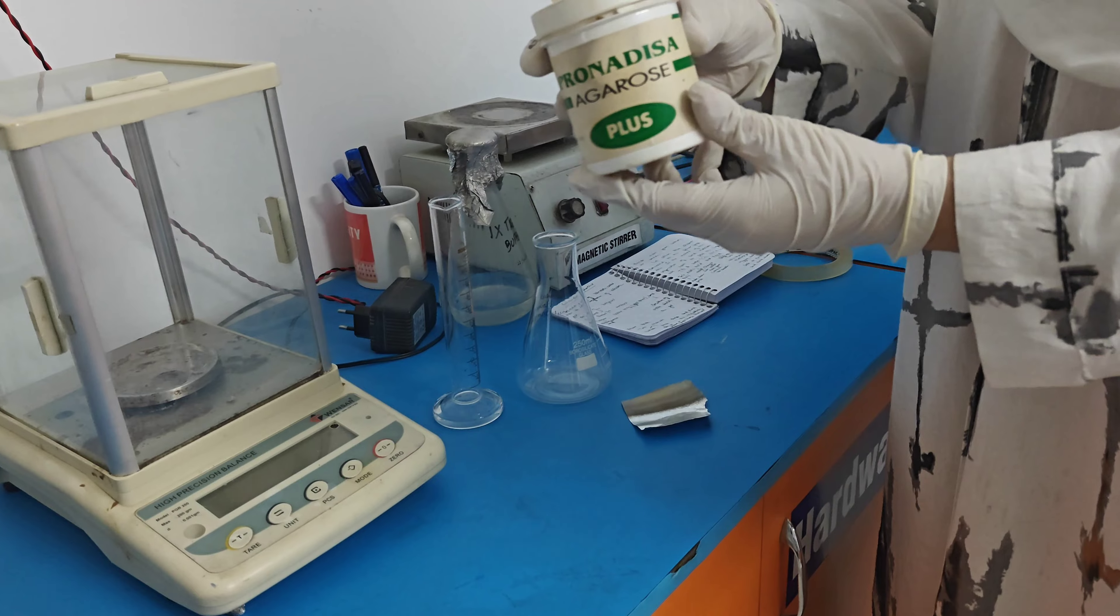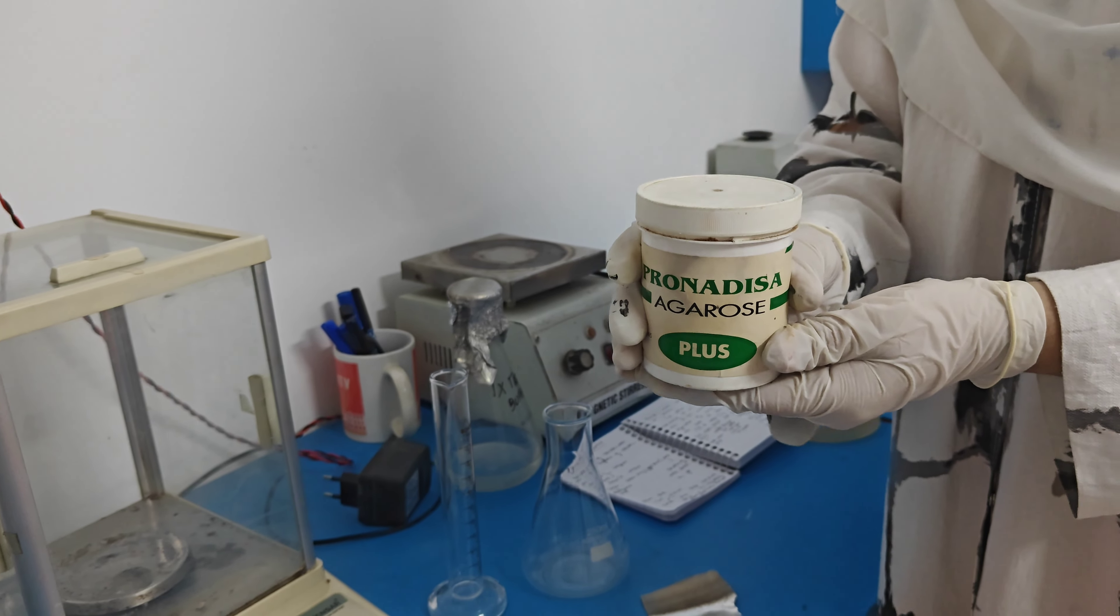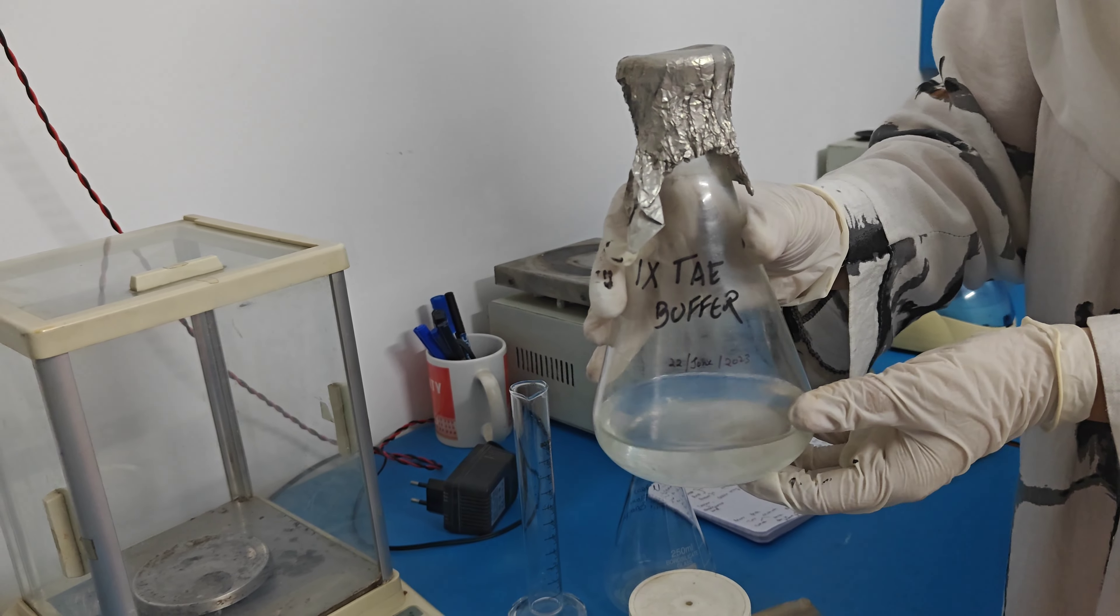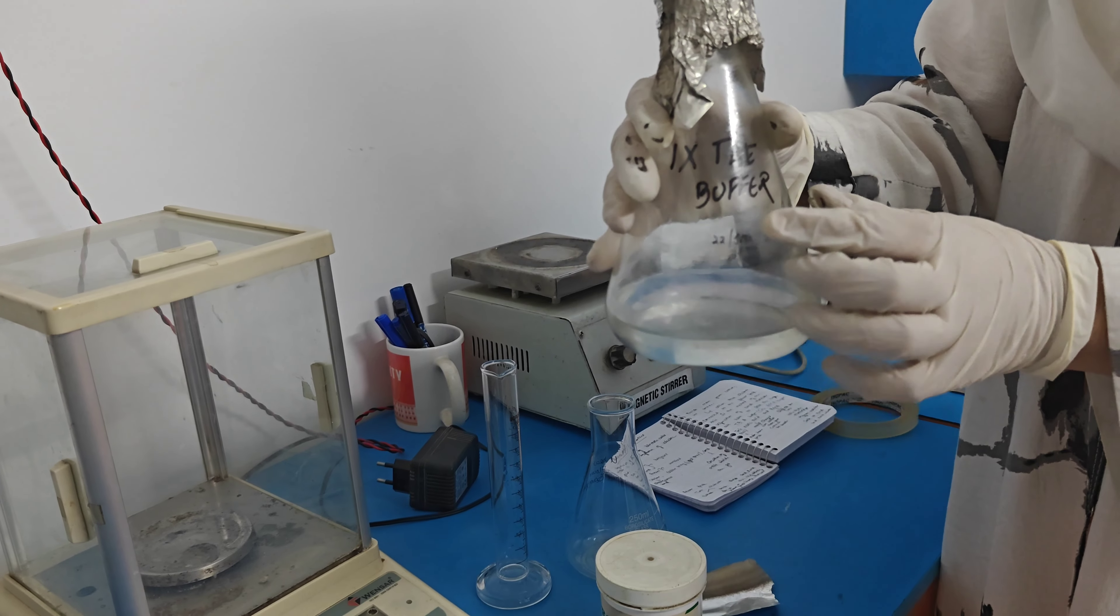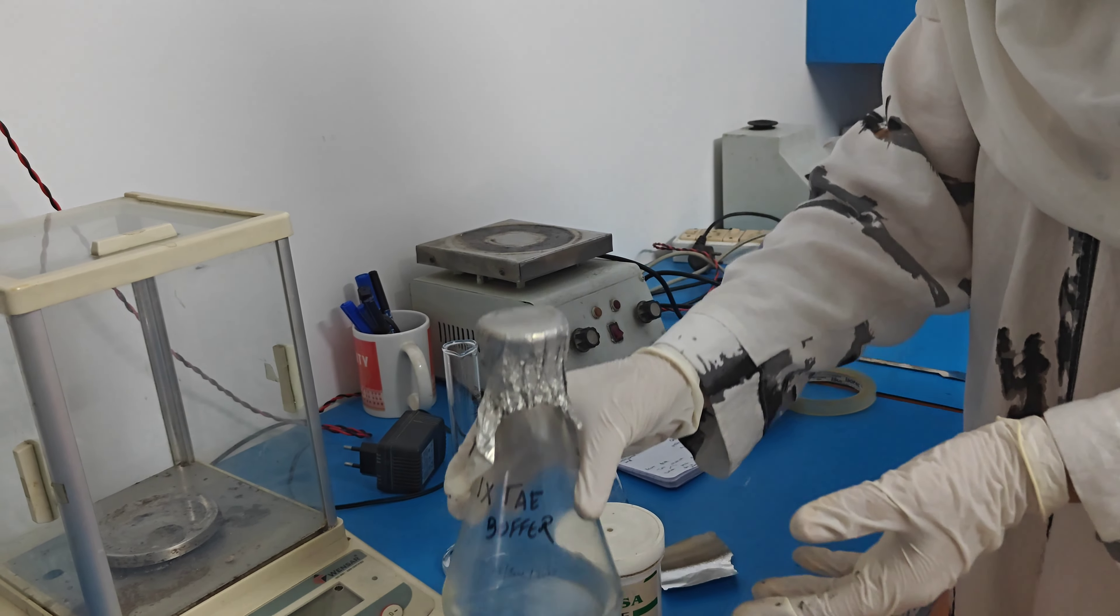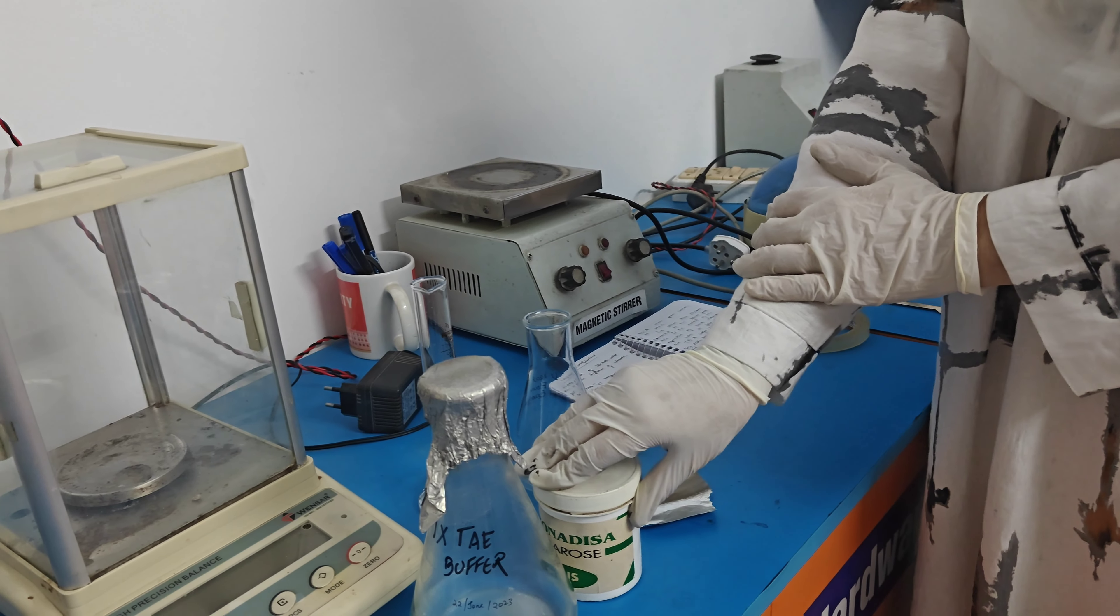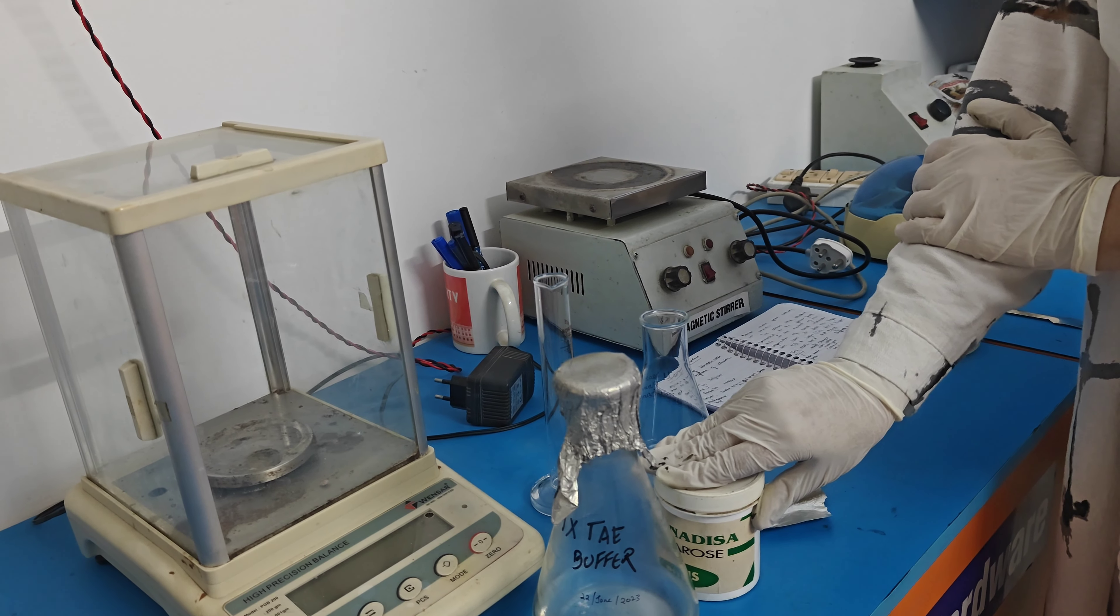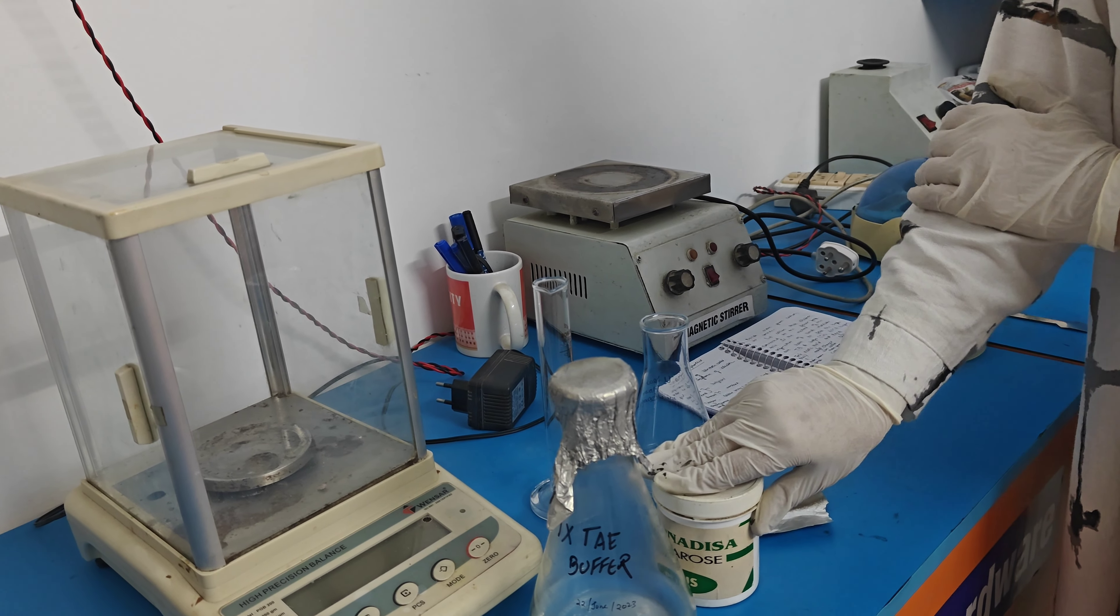First of all we have to weigh agarose, quantity of agarose is around 0.12 gram in 50 ml of 1X TAE buffer. TAE buffer is tris acetic EDTA buffer in which Tris-HCl, EDTA and acetic acid are present. Tris-HCl maintain the pH, acetic acid act as a charged ion when moved from cathode to anode, and EDTA chelate the ions which are required for the enzyme activities.